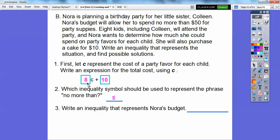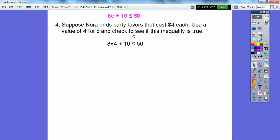So write an inequality that represents Nora's budget. Here's her cost, 8C plus 10, less than or equal to, and our total spending money is going to be this $50 right here. So that's what we're going to solve.